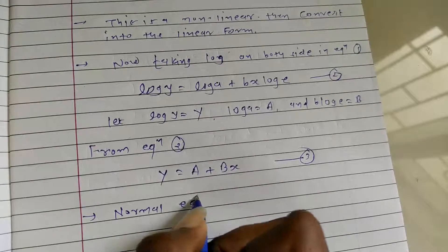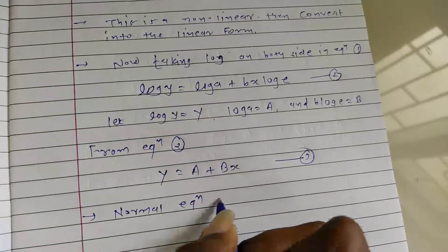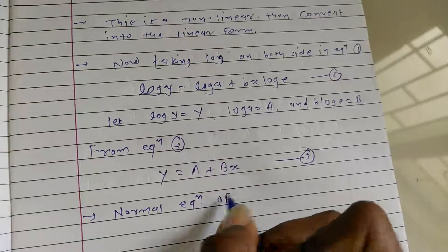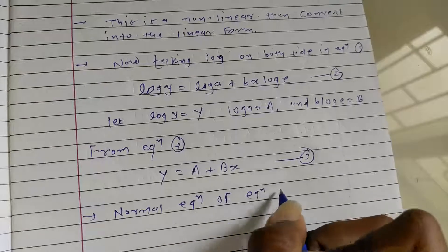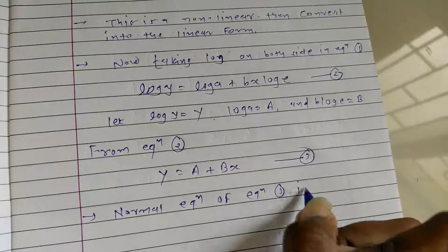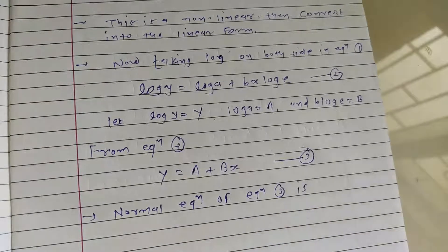The normal equations of equation number three are derived by applying the least squares method to the linear form Y = A + Bx.